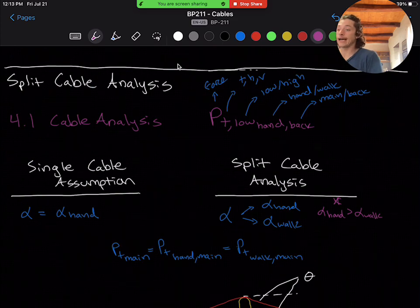PT, low, hand, back. The various subscripts are as follows. T refers to the force direction. This value can be T, H, or V, depending on if the force is in line with the cable, so T for tension, or horizontal or vertical.